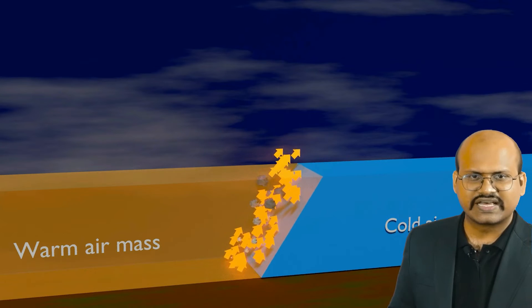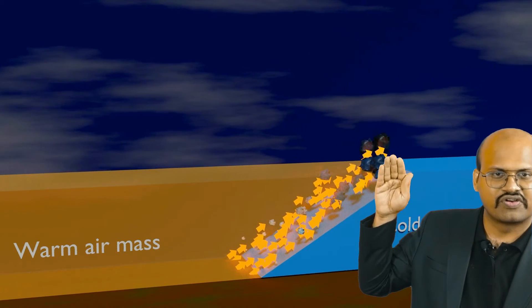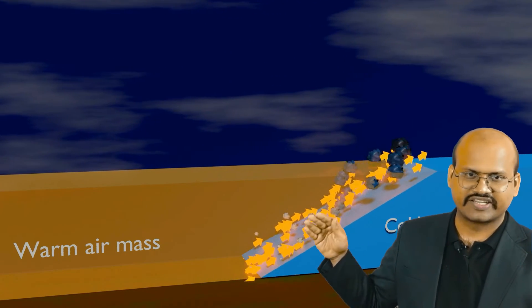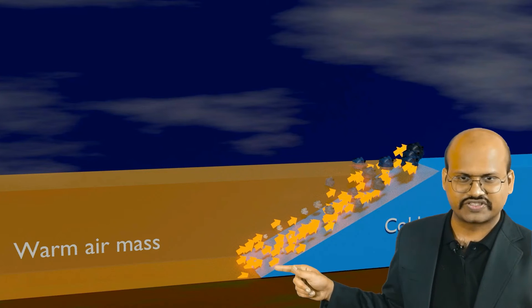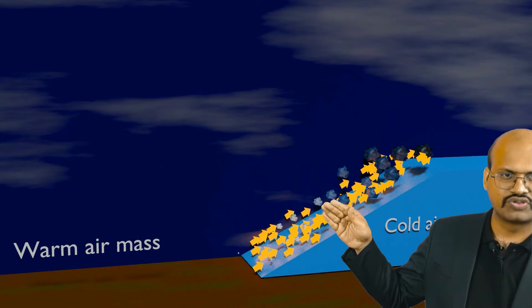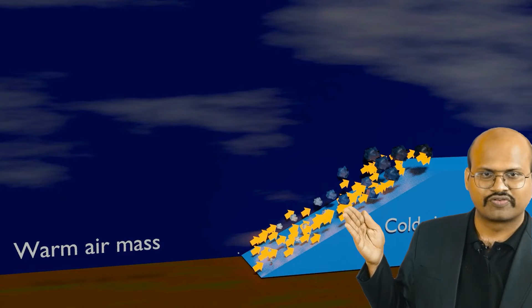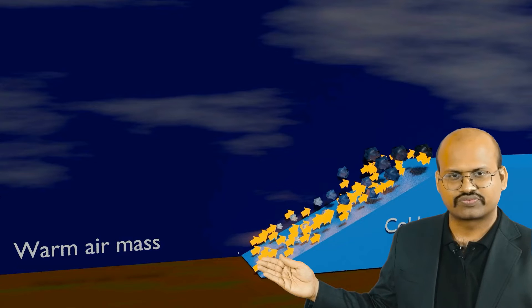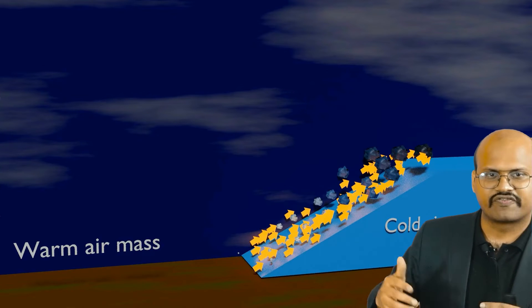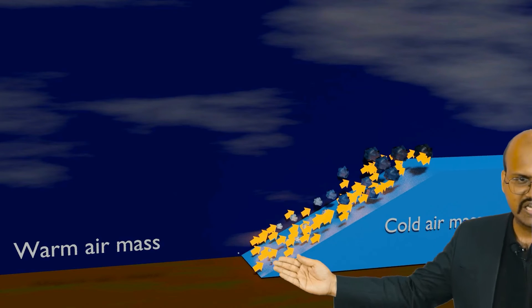The warm air is not able to displace the cold air as effectively as cold air can displace warm air. Therefore there is a very slow movement of this warm air mass. A very smooth gentle slope is formed at this boundary. At the warm front we can see that air slowly rises up smoothly over this slope. Clouds are also formed at this slope, and as the clouds move higher and higher their form changes. This warm front is spread over a very large region.